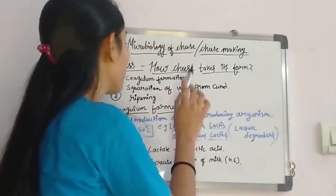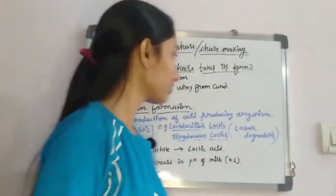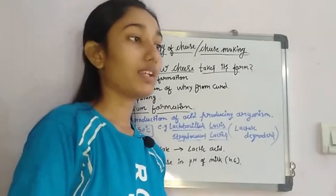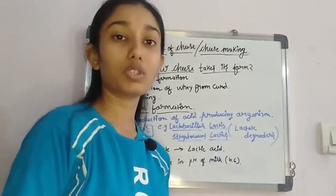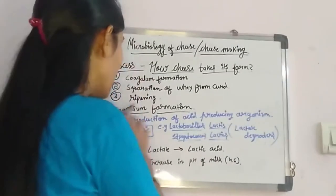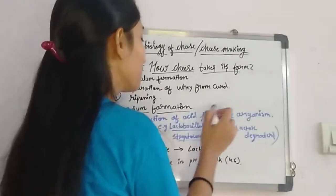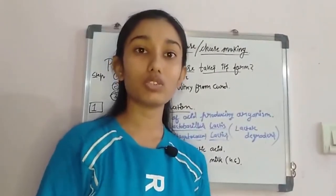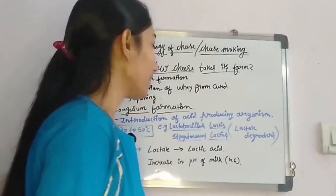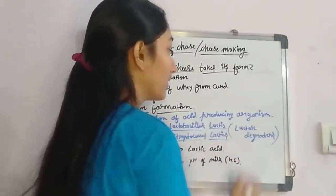Coagulum formation is how curd forms in the milk. As mentioned, we introduce microorganisms or rennet enzyme, but commercially we use both. The first part of coagulum formation is the introduction of acid-producing organisms. We use these to start acid production in the milk.